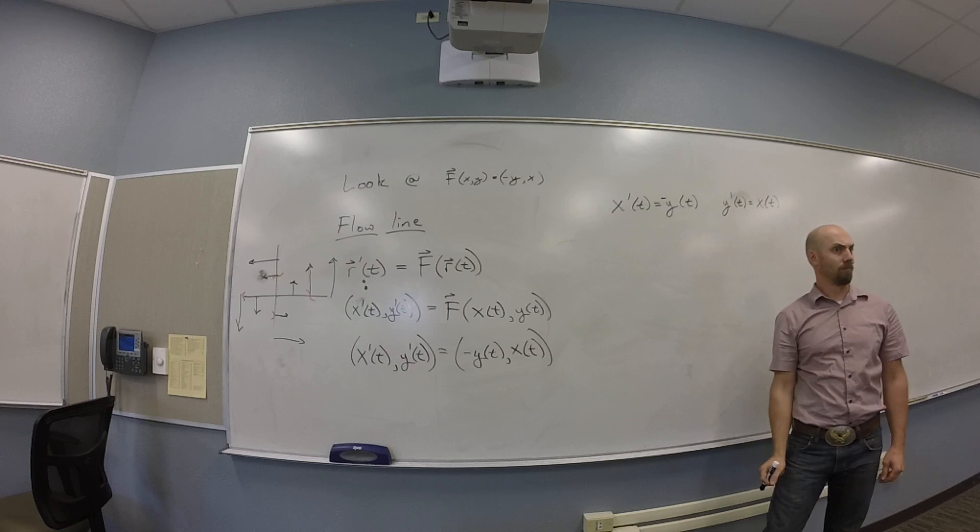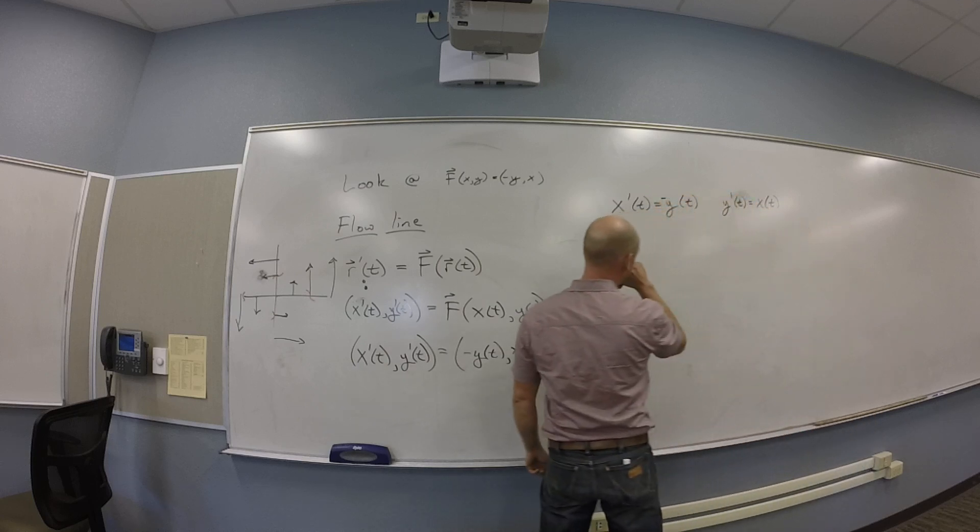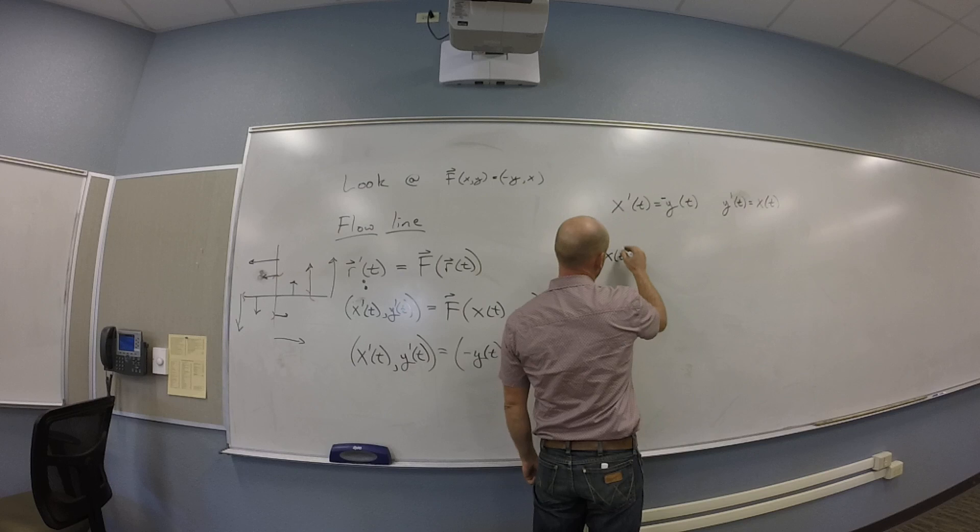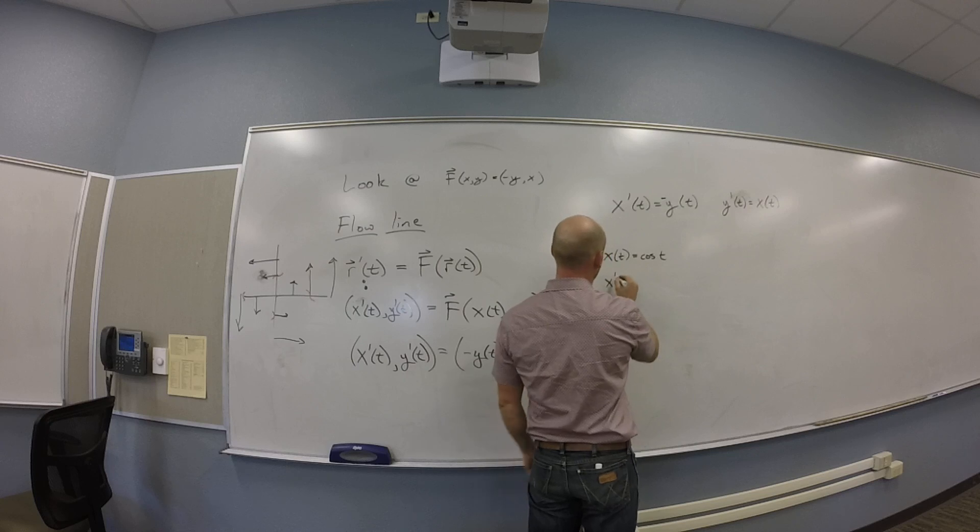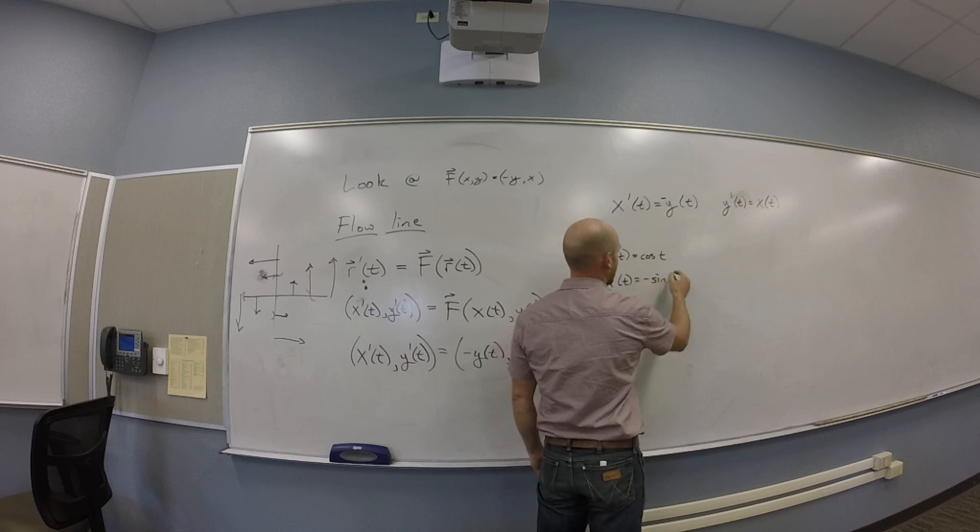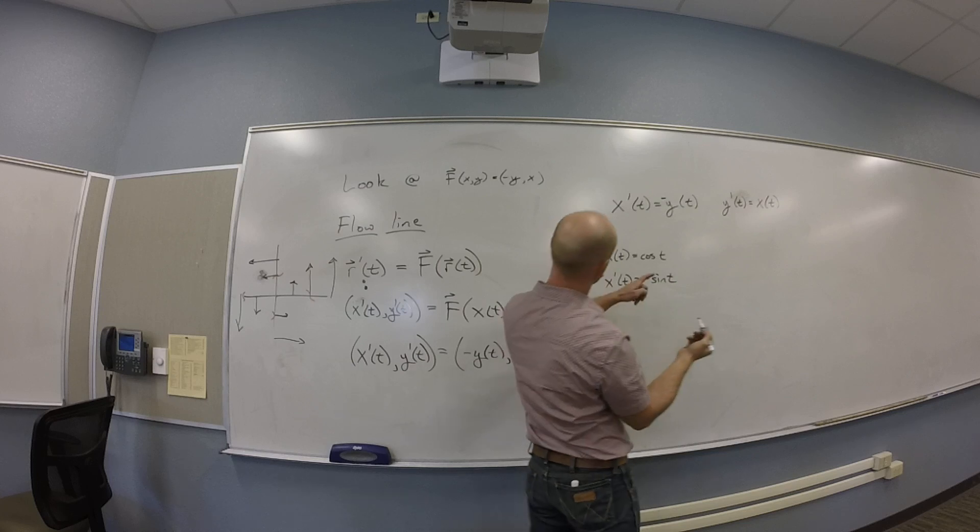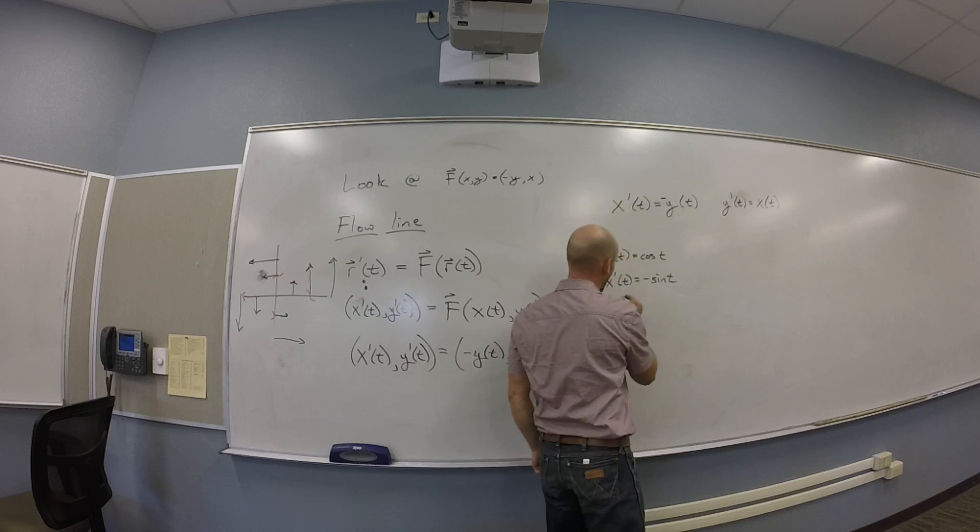Seems like a good idea. So let me try one. If I let x of t be cosine t, then x prime of t is minus sine t. And what's y then? Y would have to be sine to make that work, right? From your first equation, you see y has to be sine.